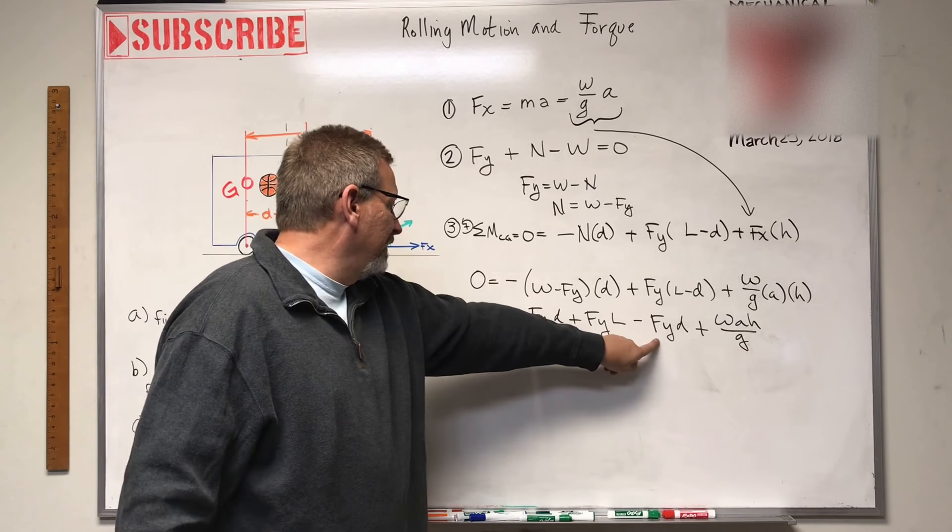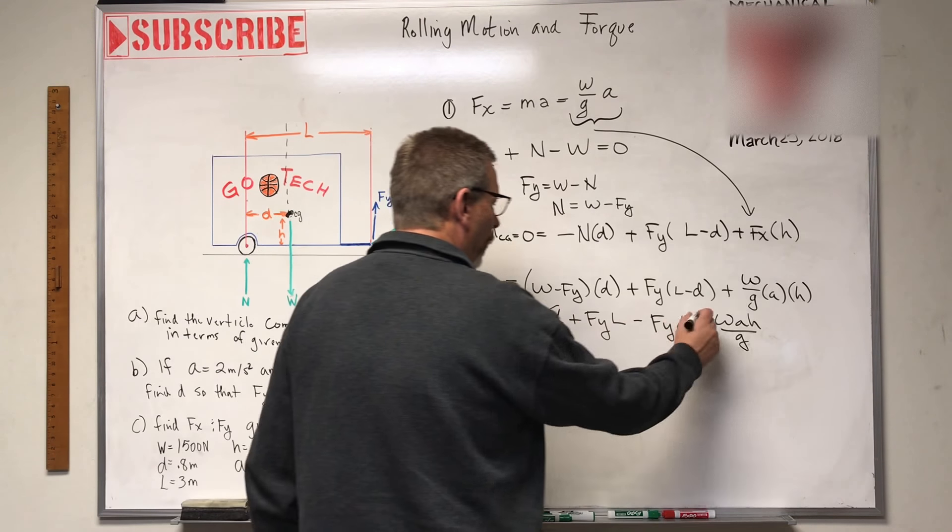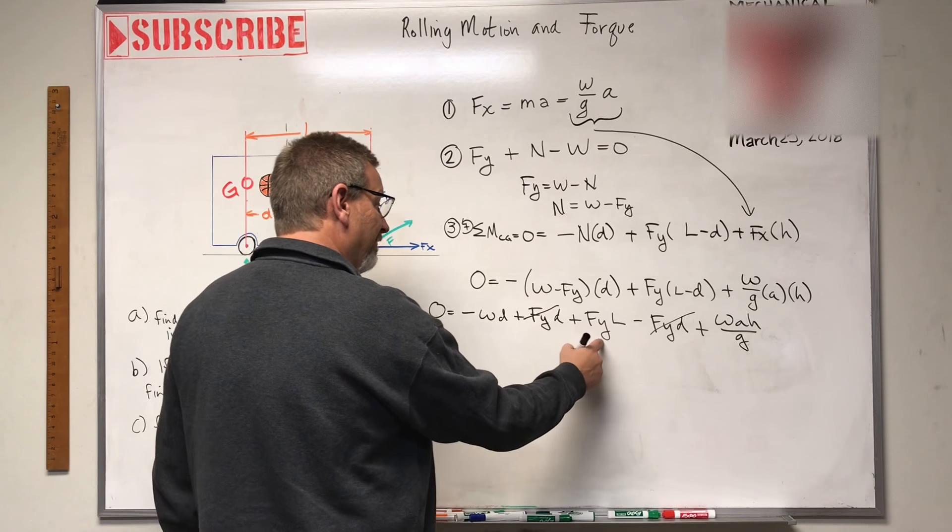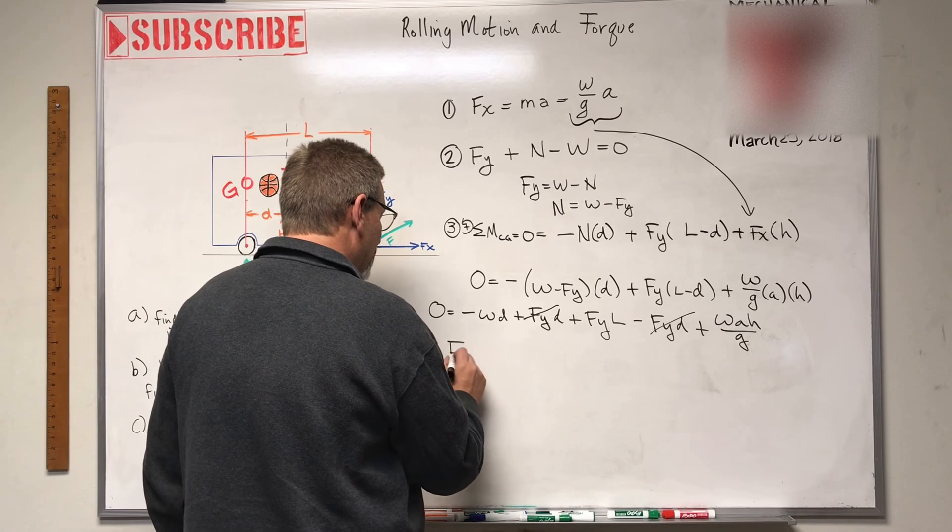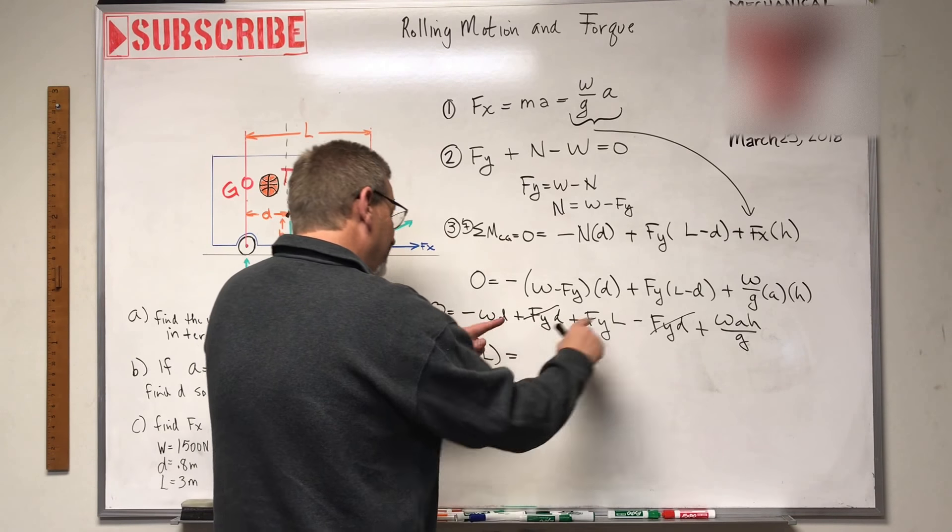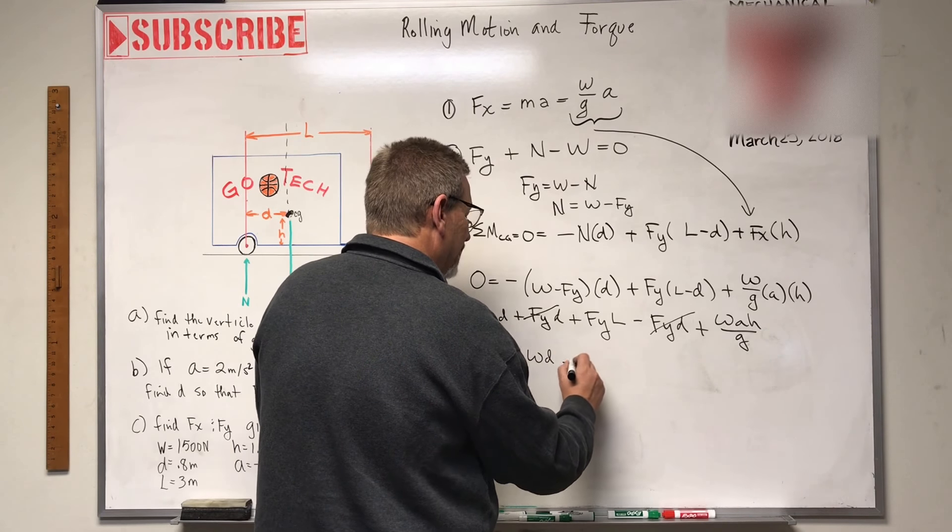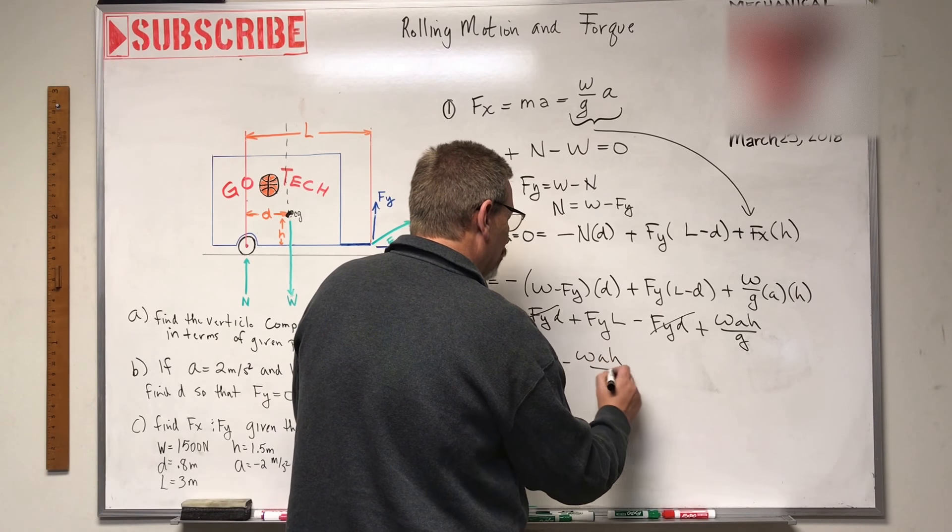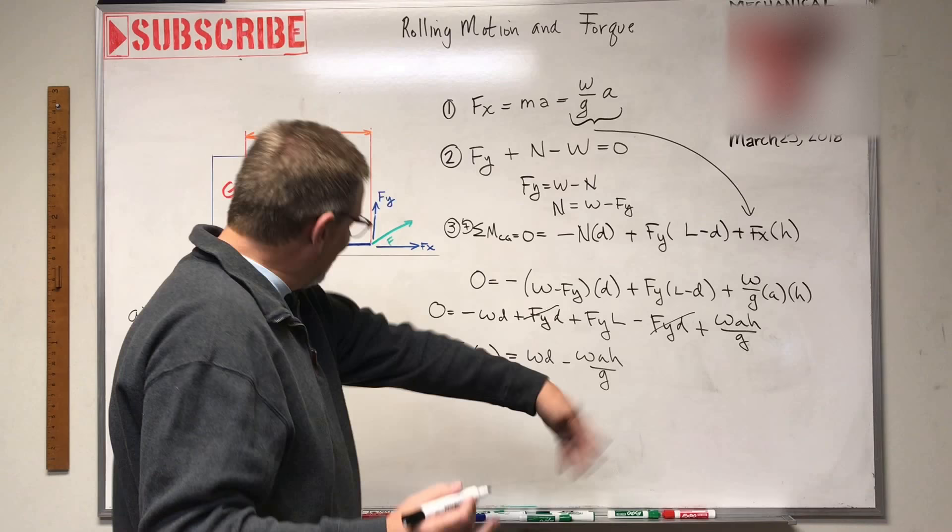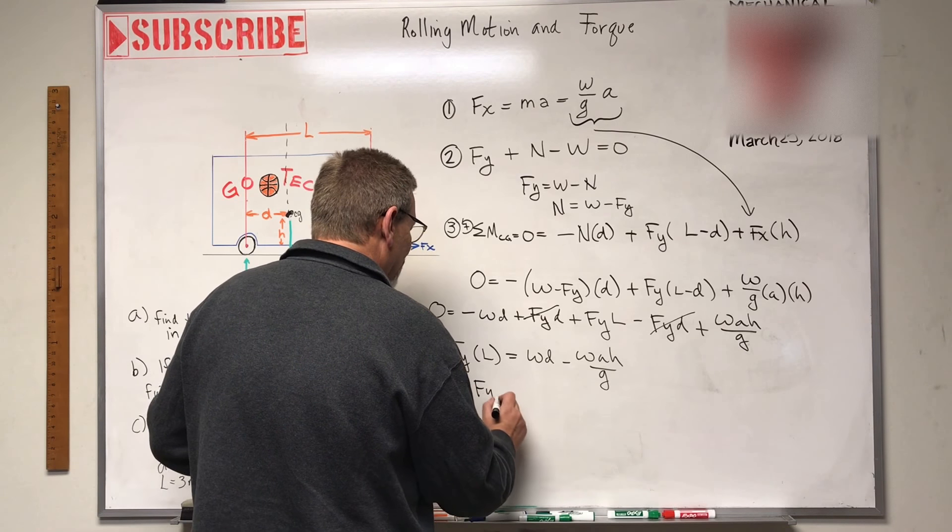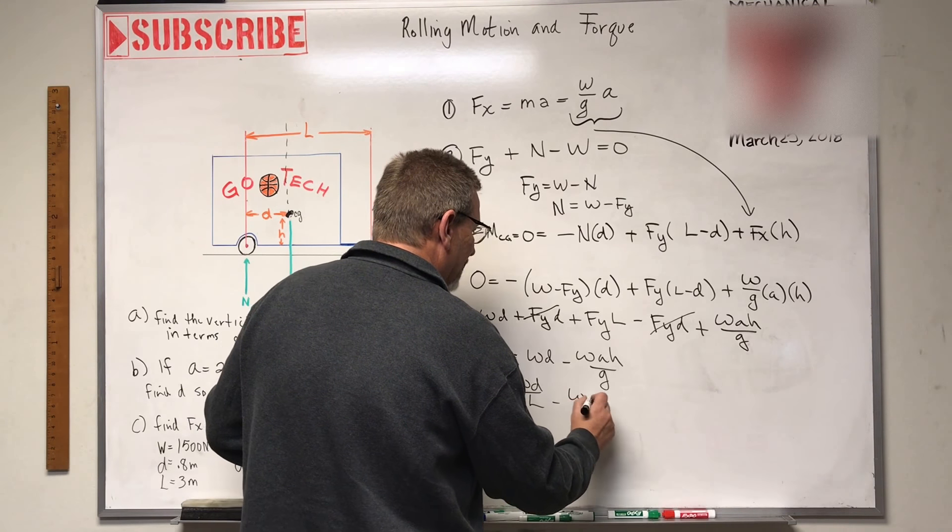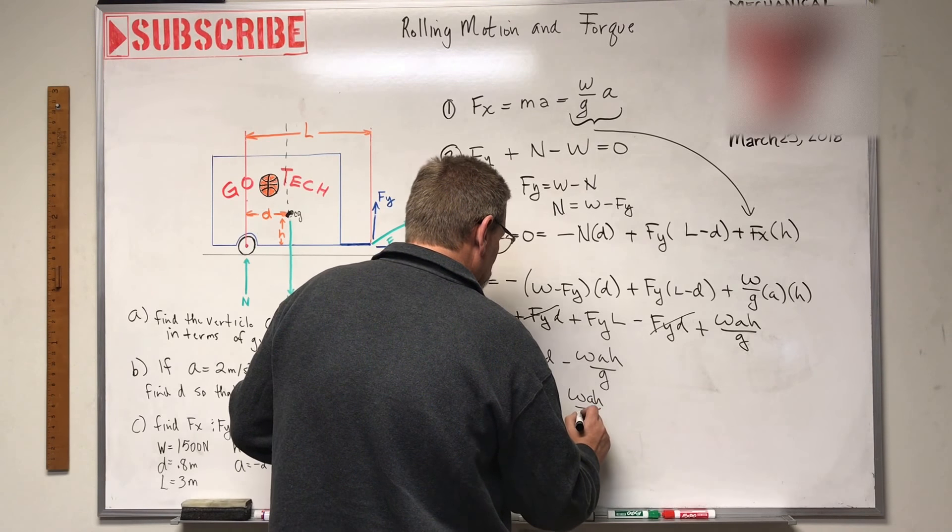Check it out. Positive, negative. So now we're left with, oh my goodness. Now we want to get Fy by himself. So let's do this. Fy times L is equal to, I'm moving that to the other side, WD minus WAH over G.